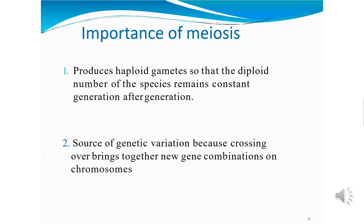Meiosis is also a source of genetic variation, because crossing over brings together new gene combinations. Crossing over occurs in the pachytene stage. The exchange of parts produces new recombinants. This is the reason that parents having three or four children — those children don't resemble each other. They are similar but not identical, and no person resembles any other person, because of genetic crossing over which occurs in pachytene.